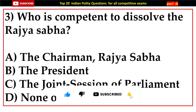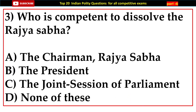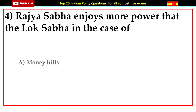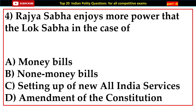Question number three: Who is competent to dissolve the Rajya Sabha? Options: A) The Chairman, Rajya Sabha, B) The President, C) The joint session of Parliament, D) None of these. Answer: D) None of these.